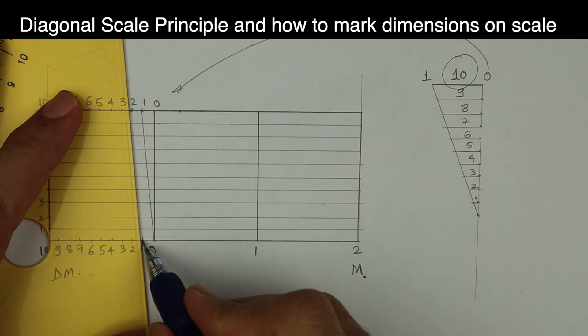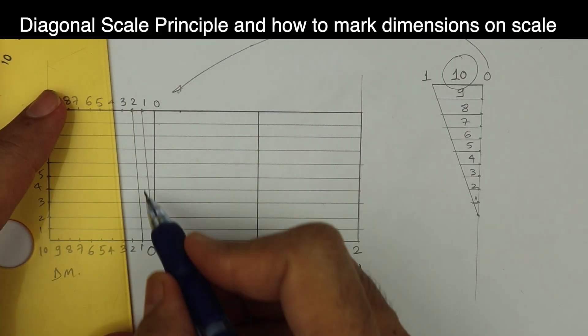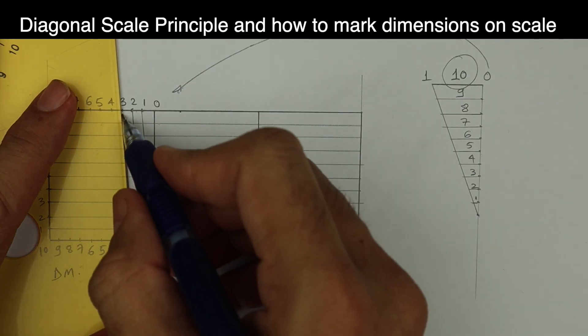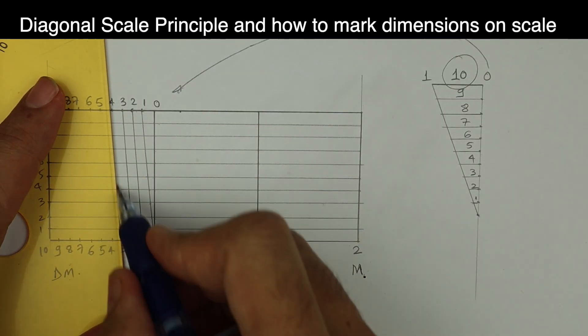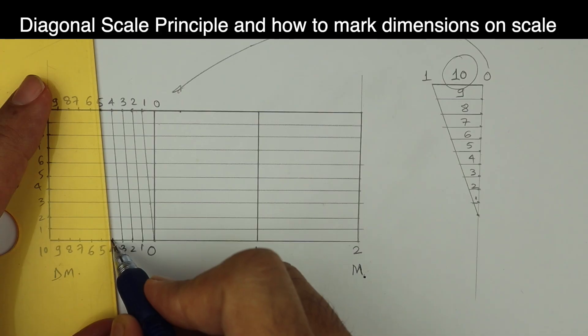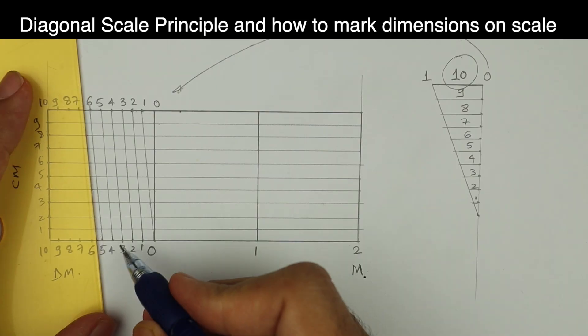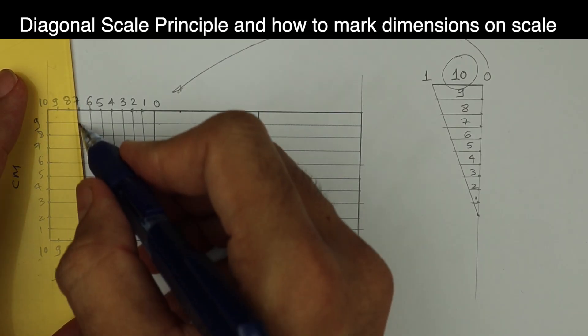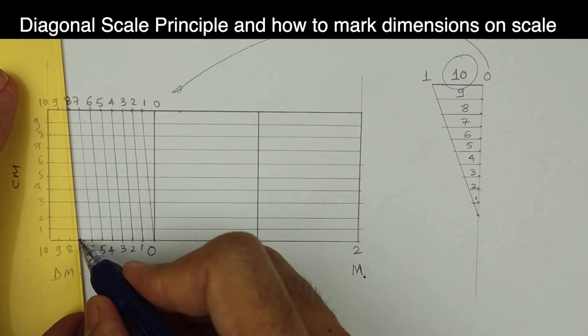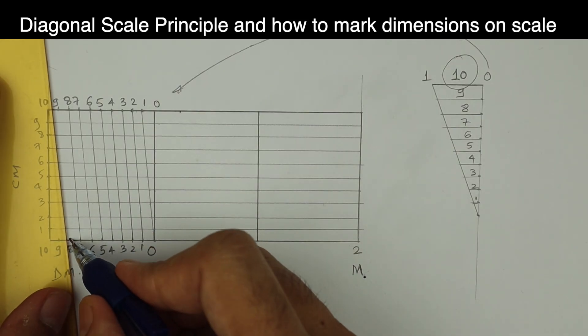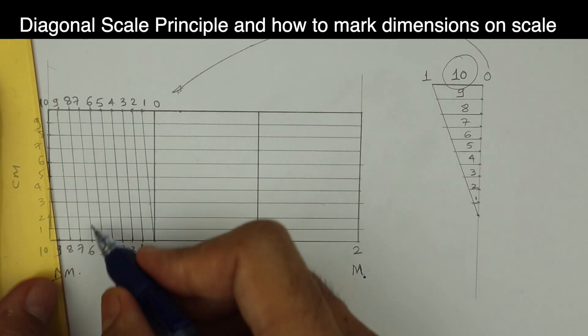Then I will join 1 to 2, 2 to 3, 3 to 4, 4 to 5, 5 to 6, 6 to 7, 7 to 8, 8 to 9, 9 to 10.